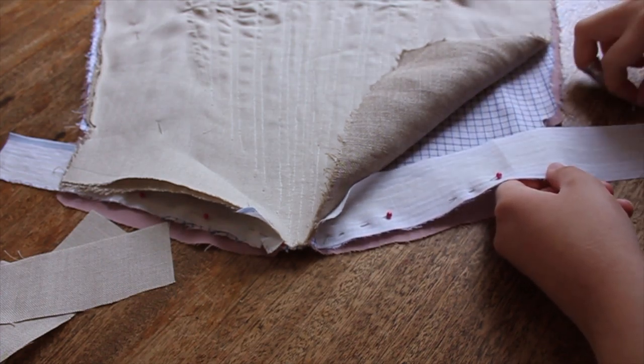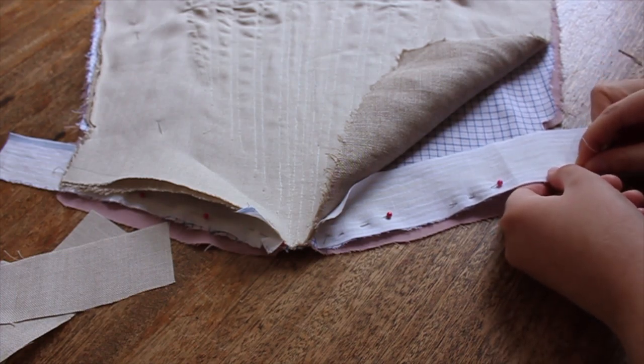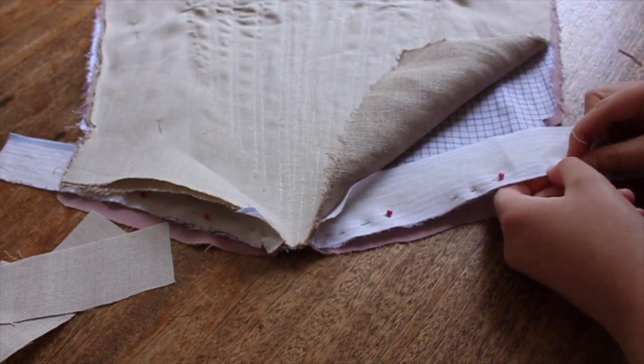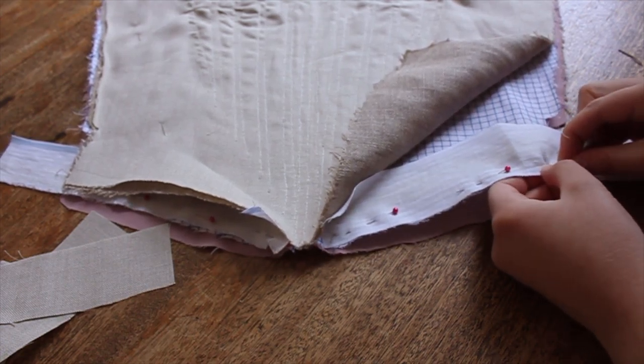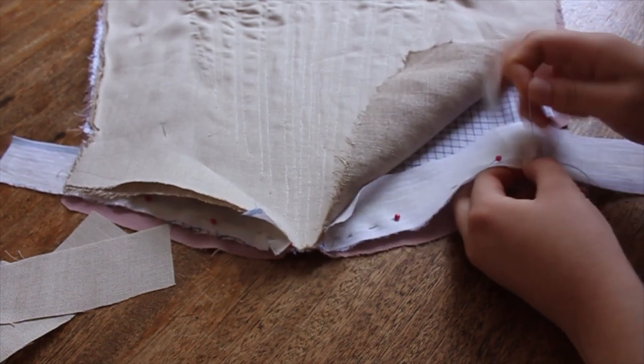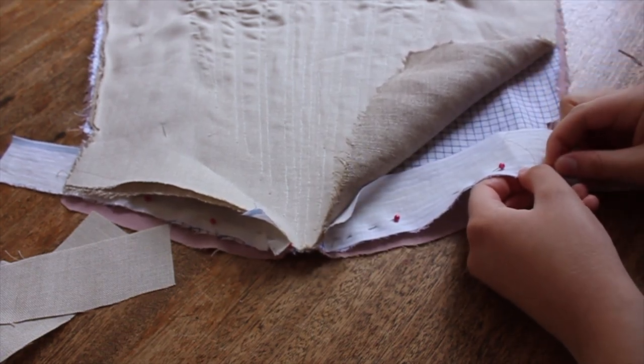This extended the underlayers around the bottom, giving me more fabric so that the shifting of the fashion fabric would not affect the length of the stays. Piecing, or stitching in bits of fabric to fill out the correct pattern shape, is a historical technique that would have been used by 18th century staymakers.